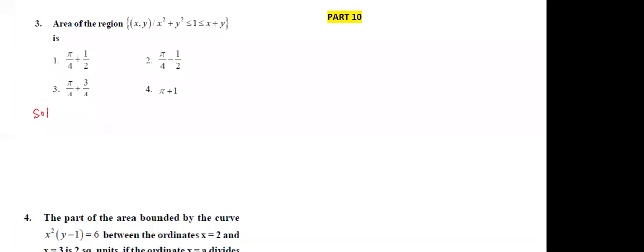Now see the third question. They are given two curves: x² + y² ≤ 1, and another curve x + y ≥ 1. By observing these two curves, draw the diagram — then you will understand easily.